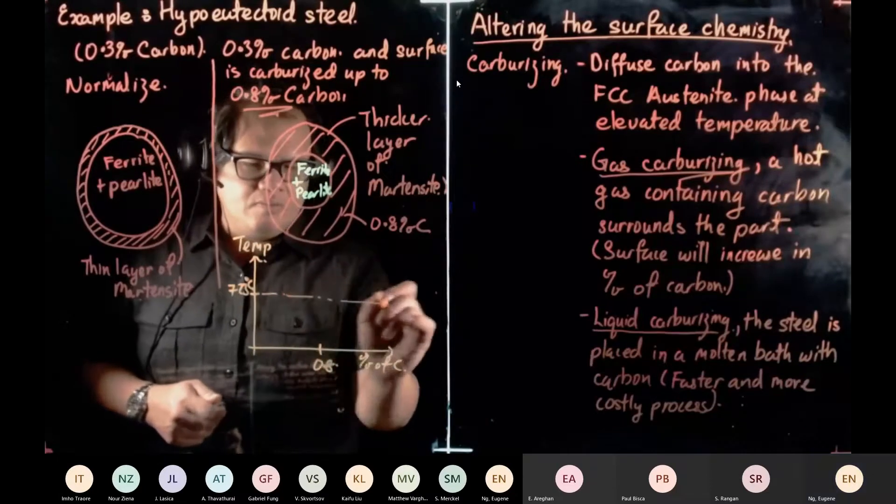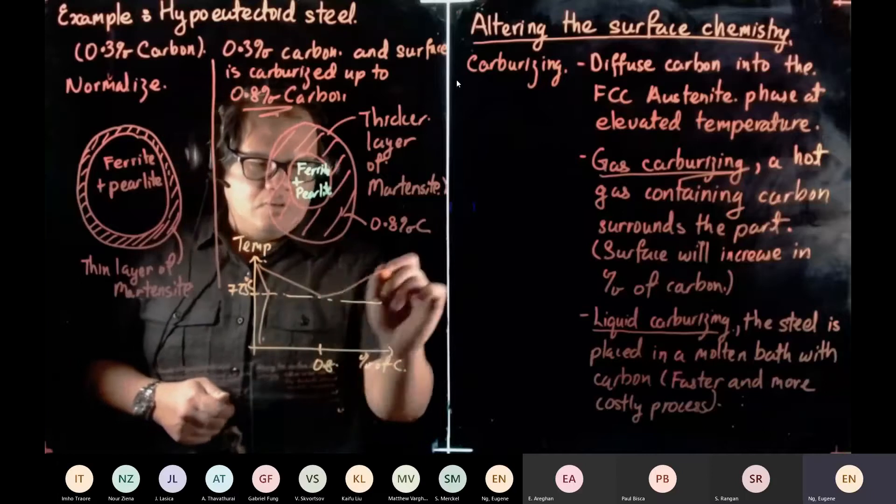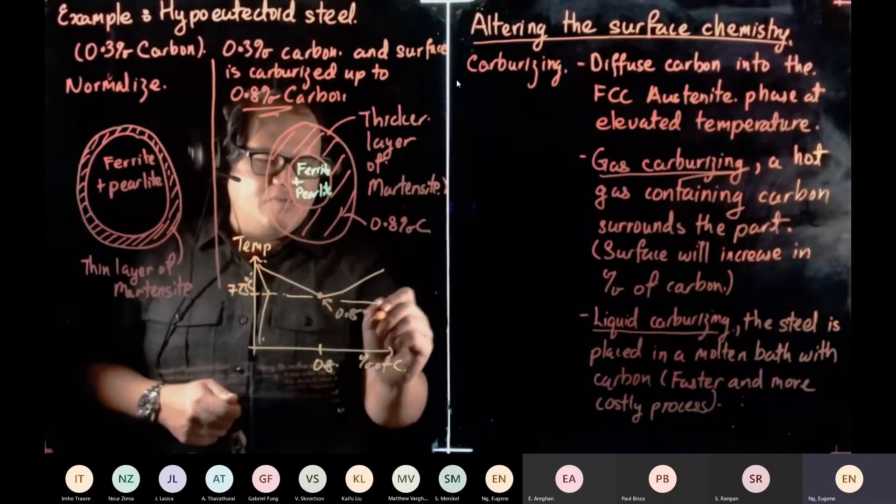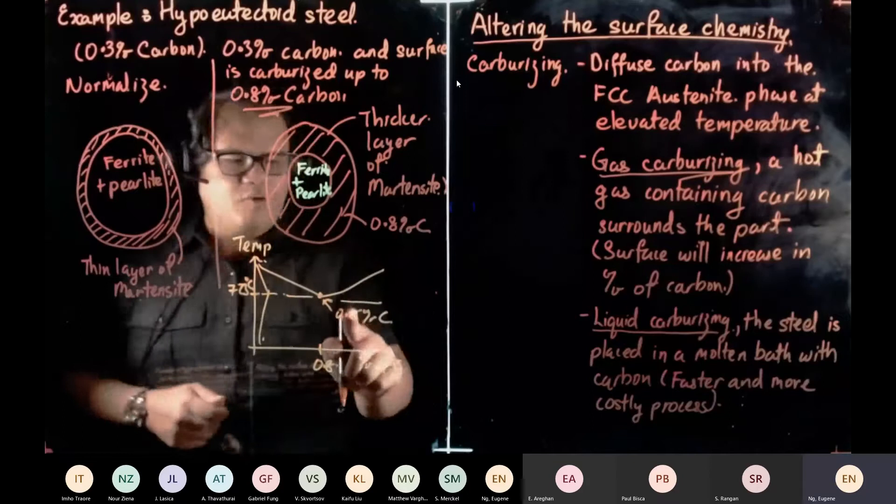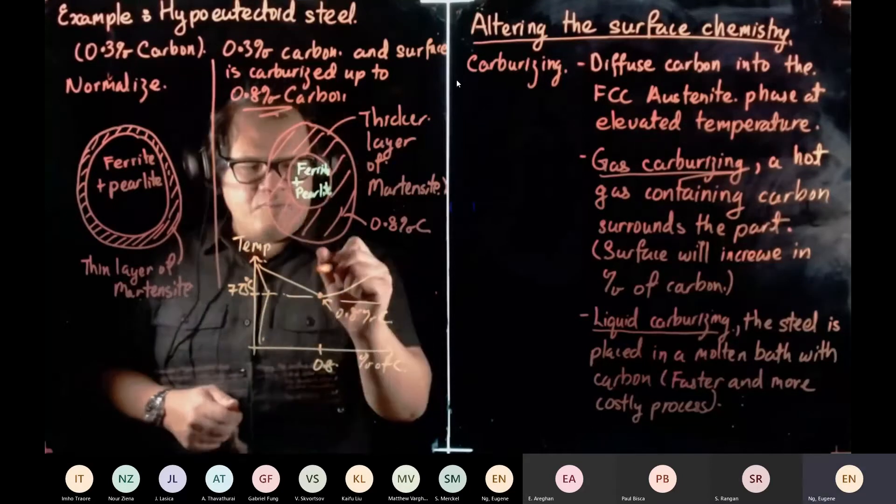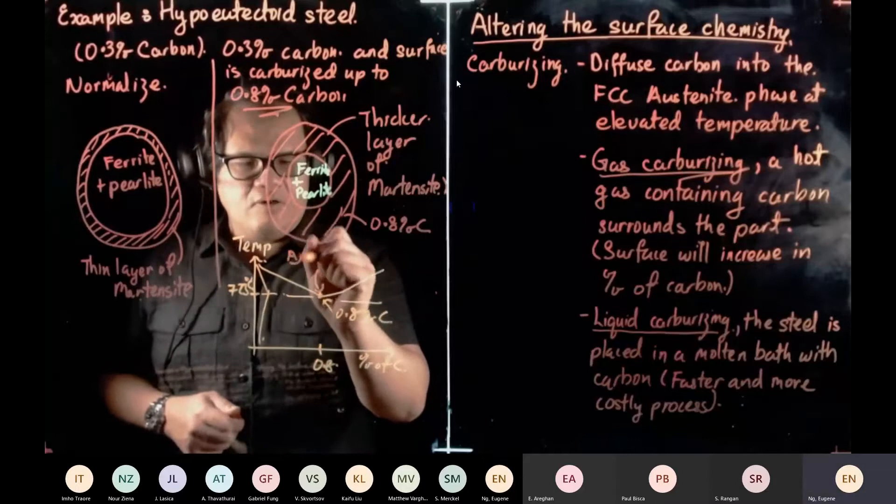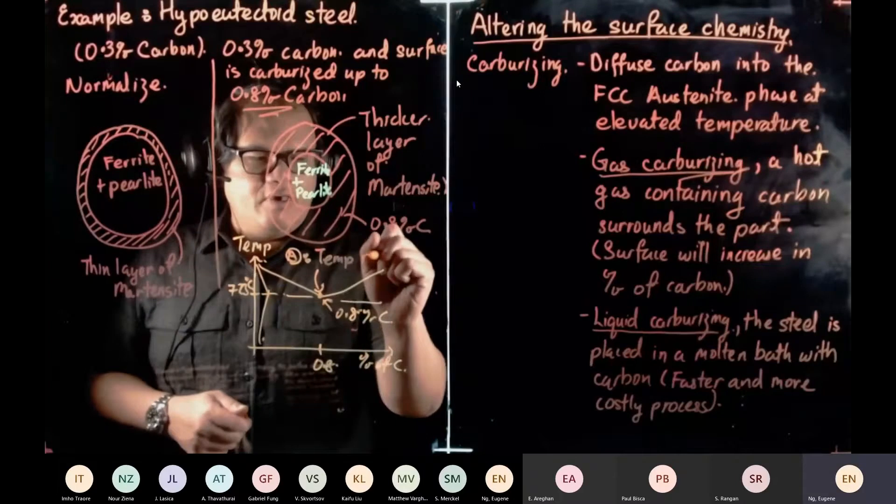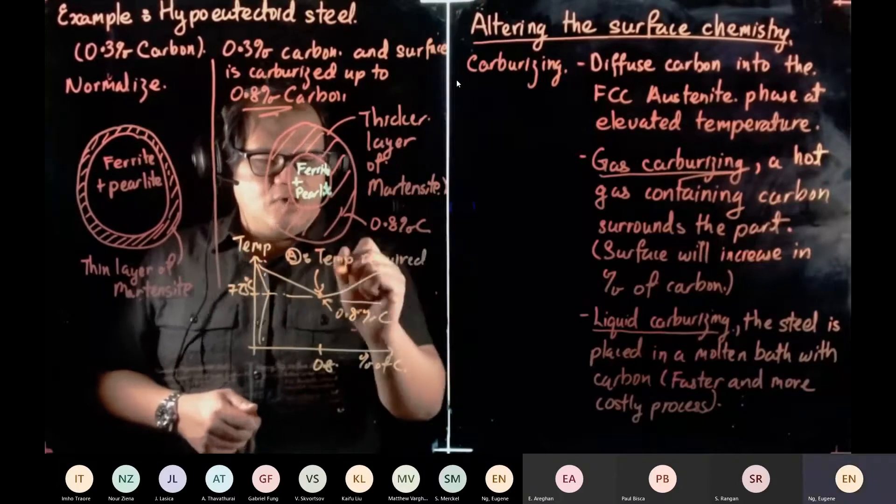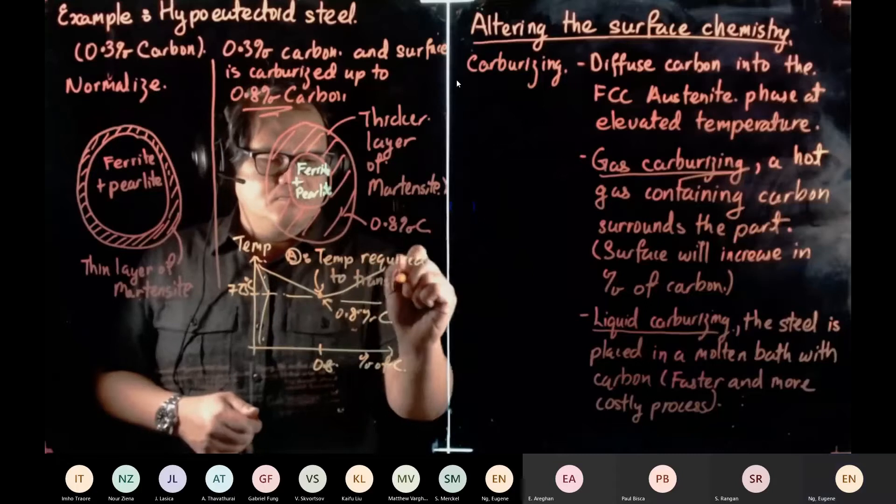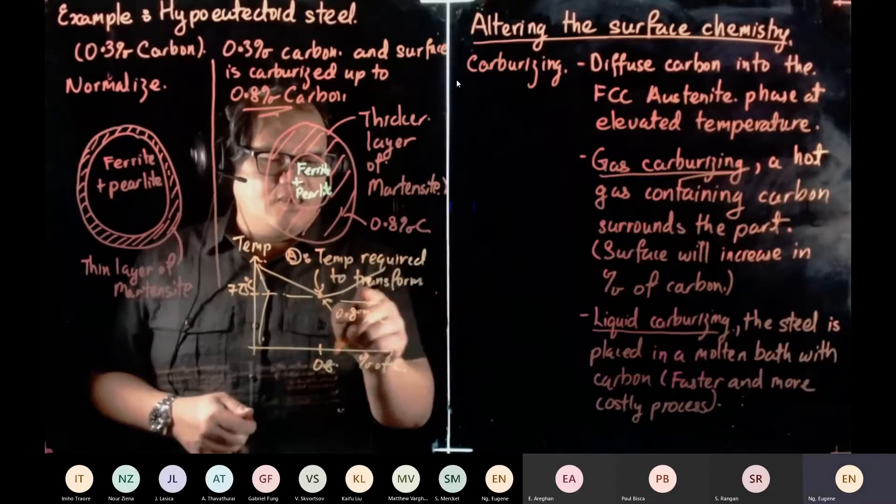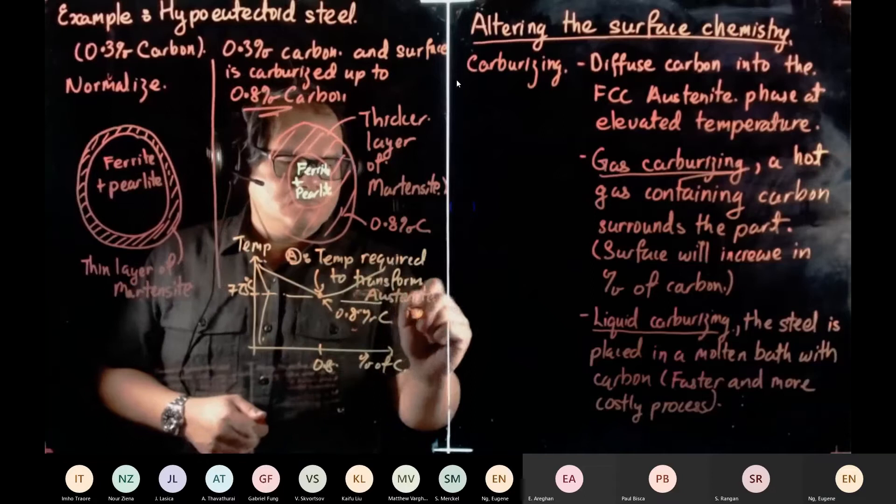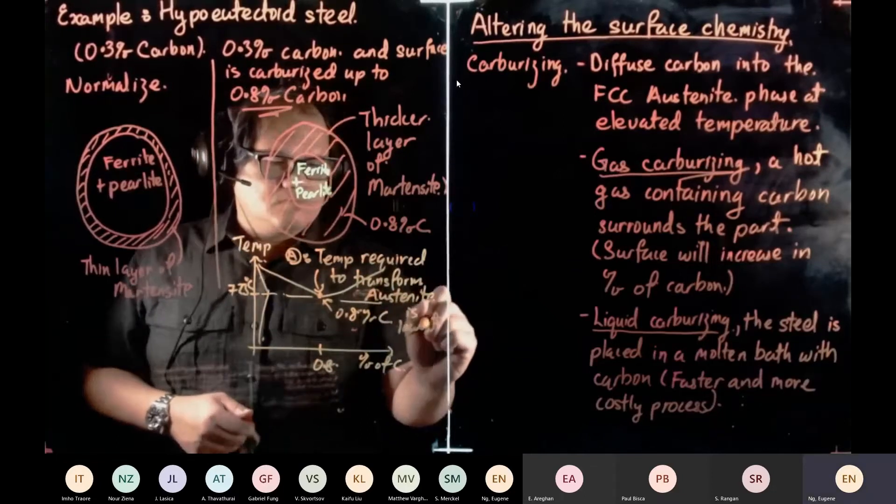So what's happening down here, so this looks familiar to all of you. Why they like to use 0.8 percentage of carbon, they love to use 0.8, is because at point A, I call this point A, the temperature required to transform martensite or austenite is at lowest.